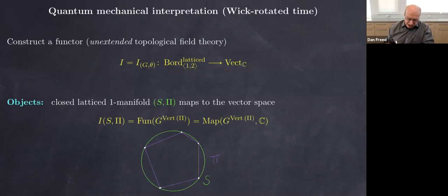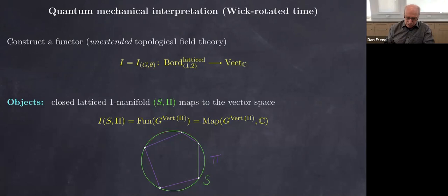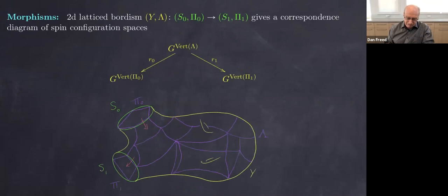The objects are finite unions of compact closed one-manifolds — finite unions of circles — but with a finite lattice inside, essentially a polygon. To this we attach a vector space: the configurations meaning at each vertex we attach a group element, so we take functions on those configuration spaces — that's the vector space attached under the functor to a one-manifold. For a bordism, the bordism is a surface (possibly with boundary) from the incoming part to the outgoing part, with a lattice nicely restricting on the boundary to those polygons.